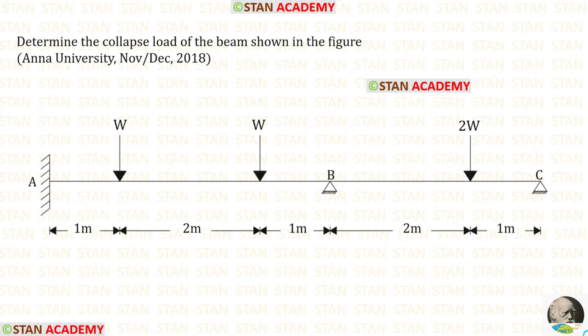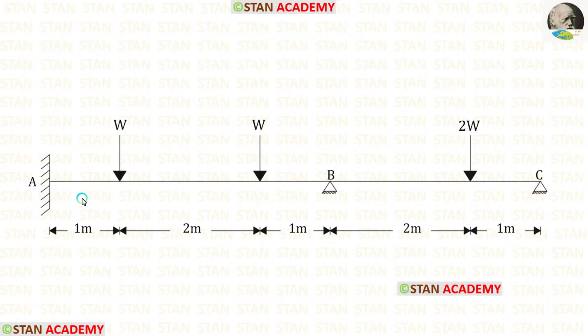Hello everyone. Today we are going to do a problem based on plastic analysis. In this continuous beam, we are going to find the collapse load. In this continuous beam, there are two spans: span AB and span BC.